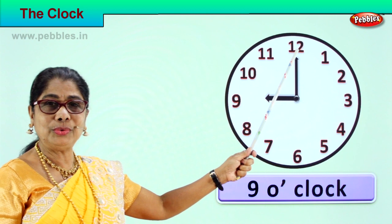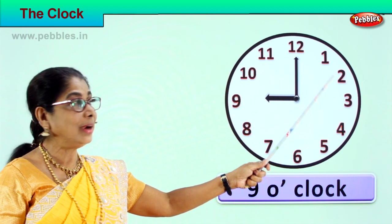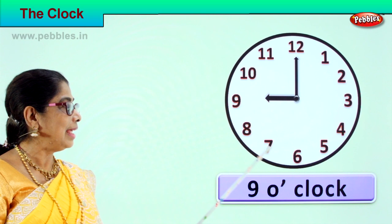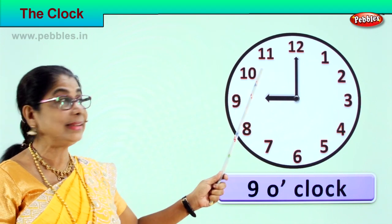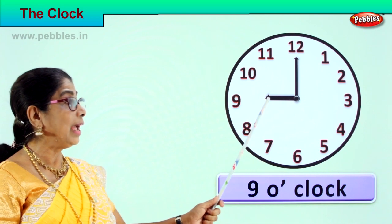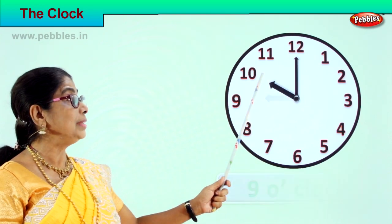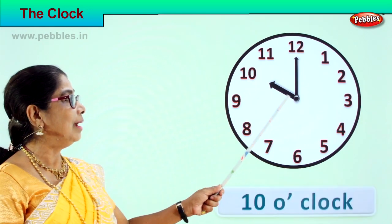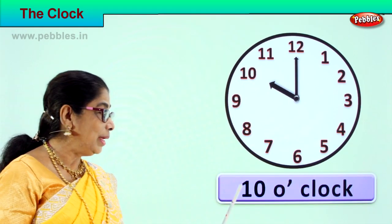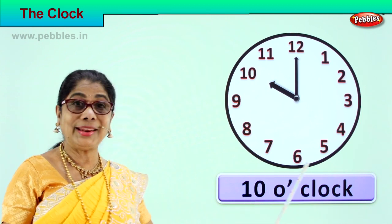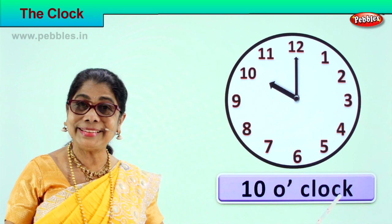Now the minute hand goes from one, all the way to eleven, and comes back to twelve. The hour hand shifts from nine to ten. Now what is the time? How do you read this? The hour hand is on ten, so we read it as ten o'clock. What time? Ten o'clock. Good.